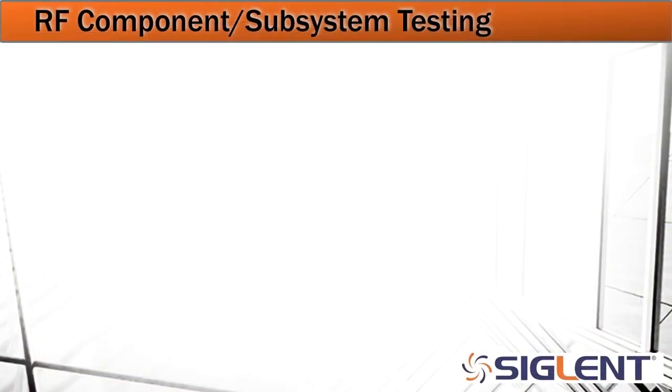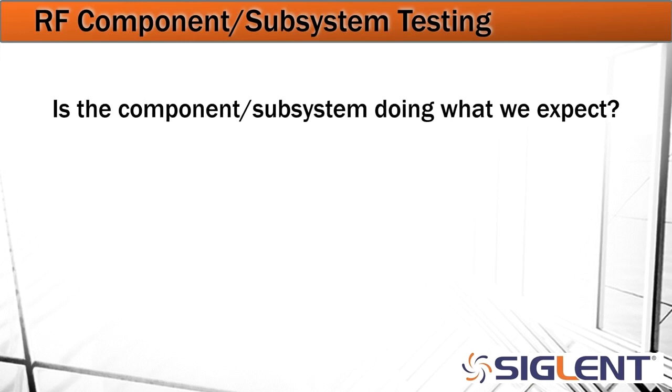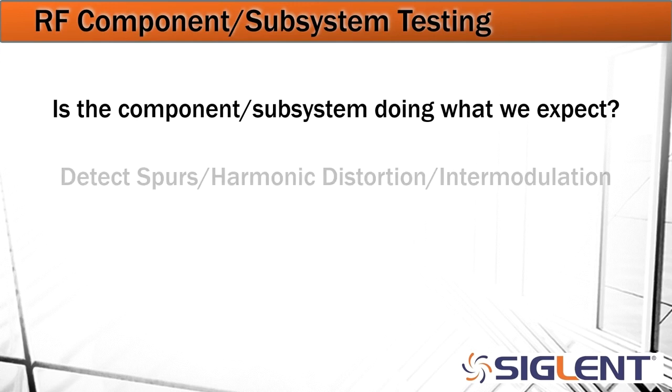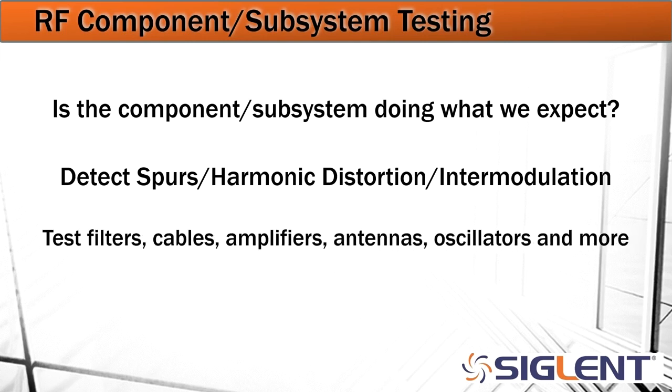The next application space I'd like to take a closer look at is going to be RF component and subsystem testing. Is the component or subsystem doing what we expect? If we expect it to be outputting an amplifier to output 10 dBm, is it actually going to do that with the given input? And is that going to work over a particular frequency range? Or is our filter working correctly? We can detect spurs, harmonic distortion, and intermodulation because the spectrum analyzer is going to allow us to visually see exactly what's happening with respect to frequency in that particular component or subsystem. And finally, we can test filters, cables, amplifiers, antennas, crystal oscillators, and more because again we can visually see the frequency ranges and the actual frequency footprint and amplitude directly on the spectrum analyzer display.